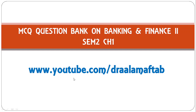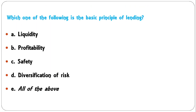Let us move on to the first question. Which one of the following is a basic principle of lending: liquidity, profitability, safety, diversification of risk, or all of the above? All these points are related to the basic principle of lending, so the correct answer is all of the above.